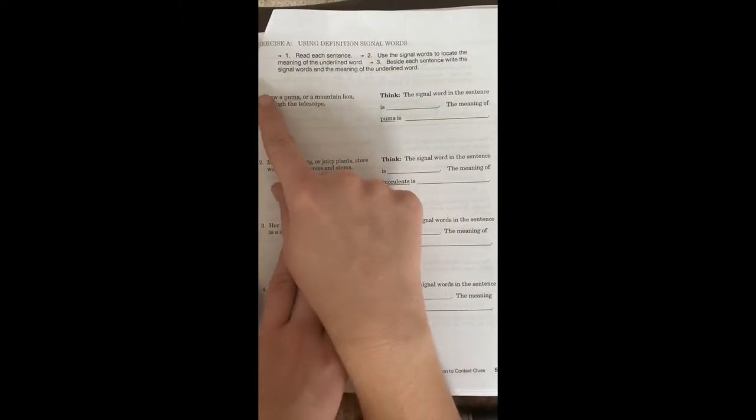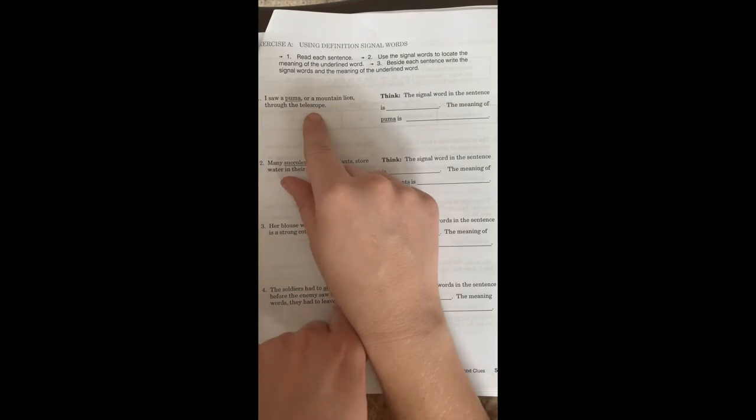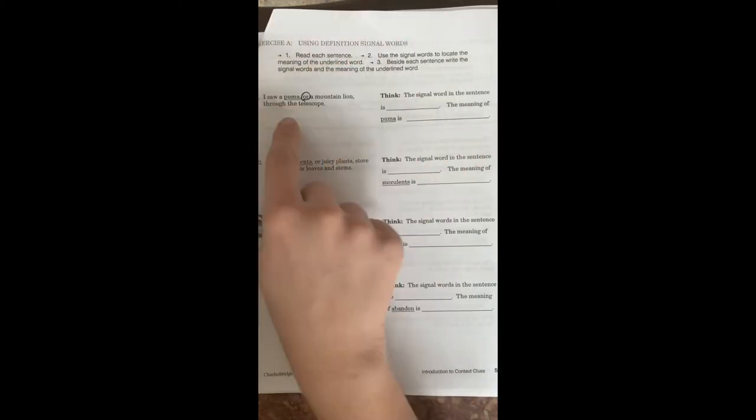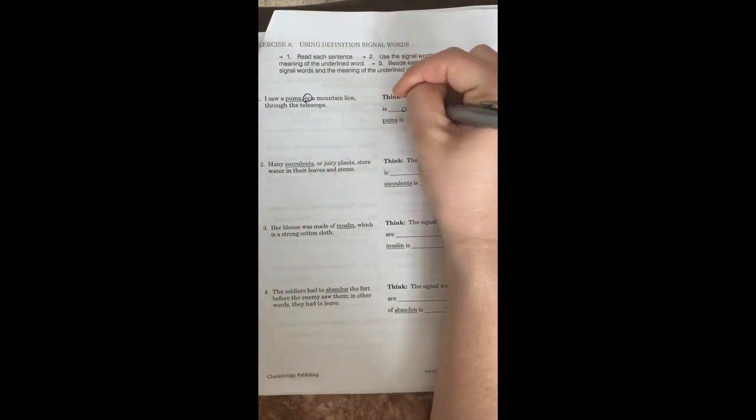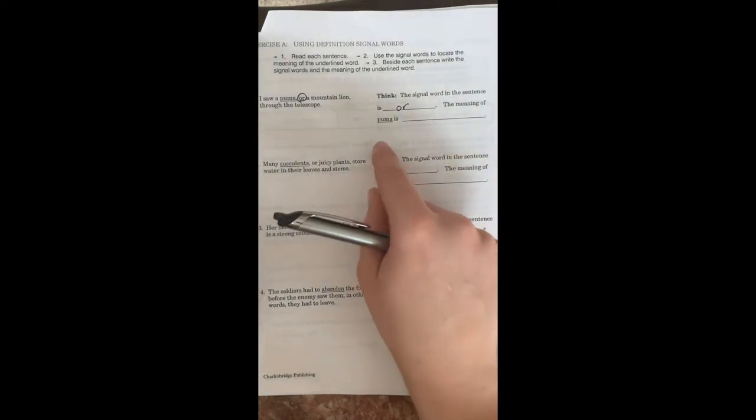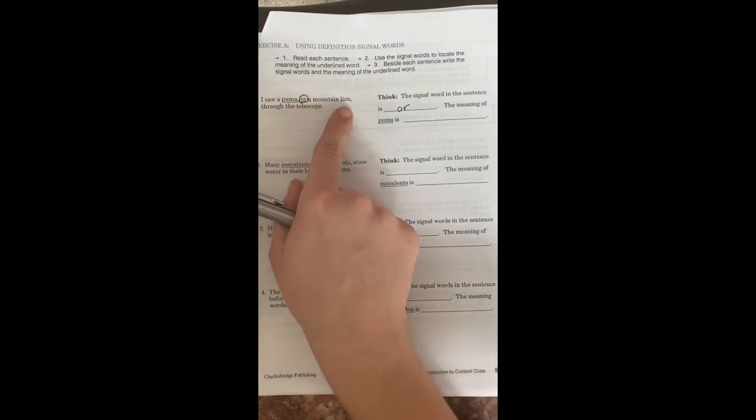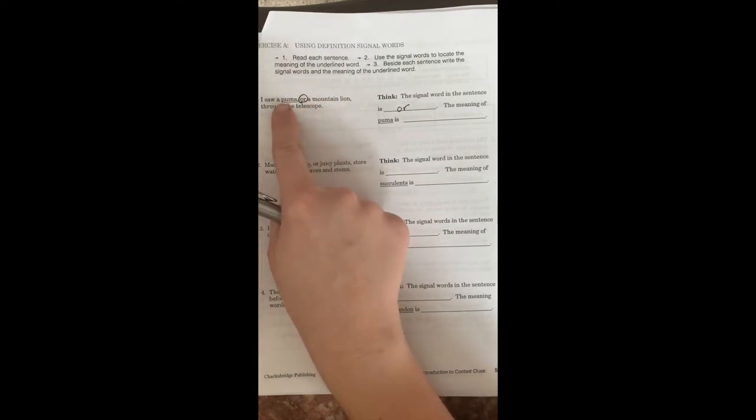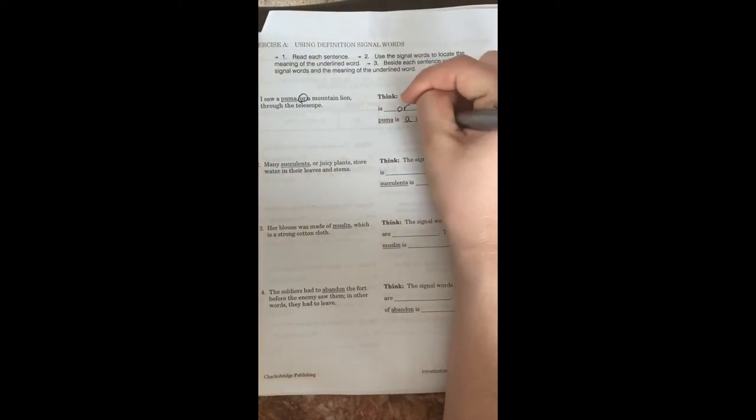Let's do the first one. I saw a puma or a mountain lion through the telescope. Or is in this sentence. I'm going to circle it because that's our signal word. So we can say the signal word in the sentence is or. Nice and easy. The meaning of puma is, now in order to find that meaning, we have to look back at our context clues. So the signal word was or and the clue is a mountain lion. Oh, so a mountain lion can also be called a puma.